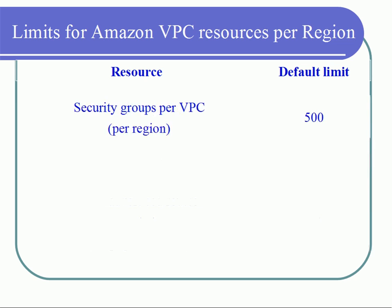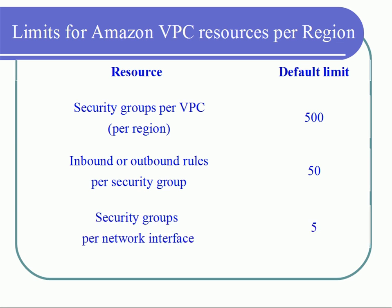For security groups, per region you can have up to 500 security groups per VPC. Inbound or outbound rules per security group can be up to 50. Security groups per network interface can be up to 5.